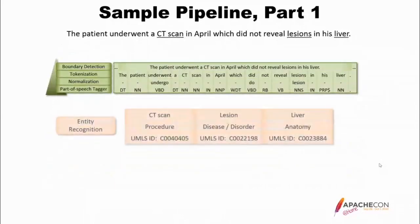So we have all that done. Using all the things that were put together from those components, we can recognize entities. We can recognize the CT scan as a procedure, a lesion as a disease disorder, and the liver as an anatomical site. At the bottom of these peach-colored boxes it says UMLS ID — this is a CUI, a normalized unique identifier that belongs to clinical events and anatomical sites.